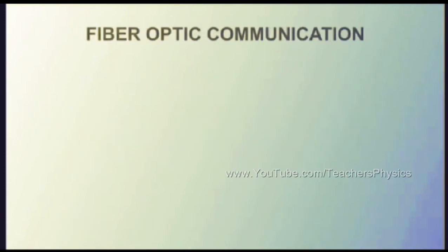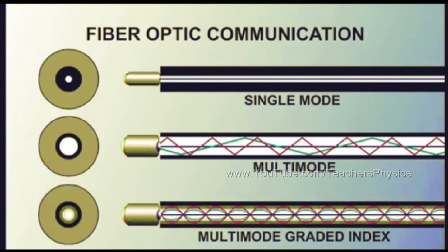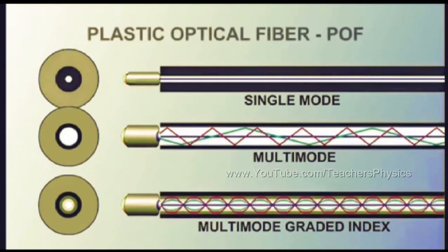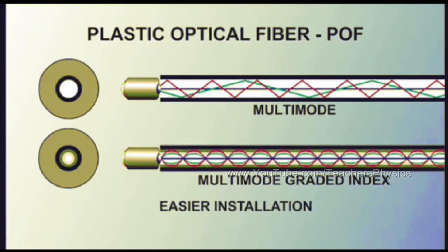Historically, single-mode, multimode, and multimode graded-index fiber strands were made of glass. Now, plastic optical fibers have been developed that offer the same effectiveness as glass multimode fibers. Plastic optical fiber is much less difficult to install and maintain, making it preferable in many situations.